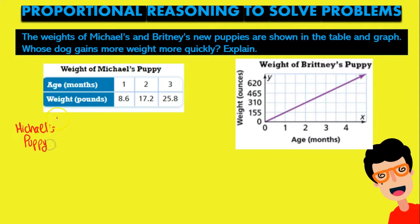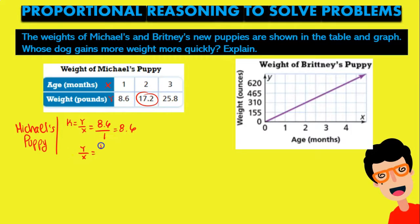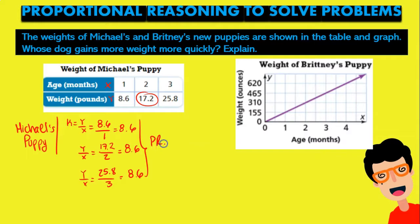For Michael's puppy, we're going to try to see if the table actually shows a proportional relationship. We're going to divide the amount of y by the time, which is x. Remember, x is always going to be time because it's our independent variable, so the value for k is y divided by x. So 8.6 divided by 1 is 8.6. For our second value, 17.2 divided by 2 is also 8.6. And for the third, 25.8 divided by 3 is again 8.6. That means we have a proportional relationship for Michael's puppy, with a value of 8.6 pounds per month.